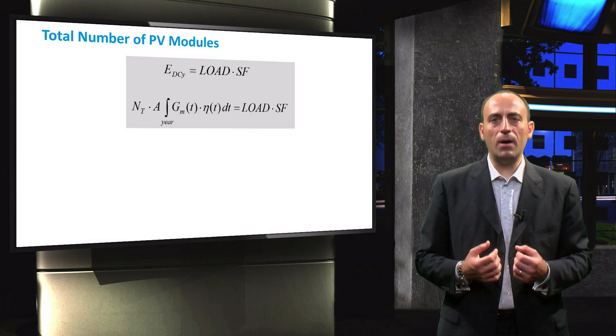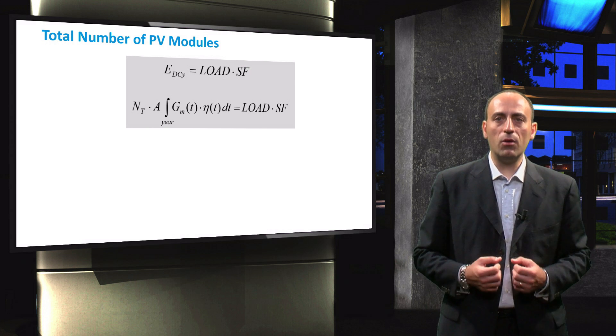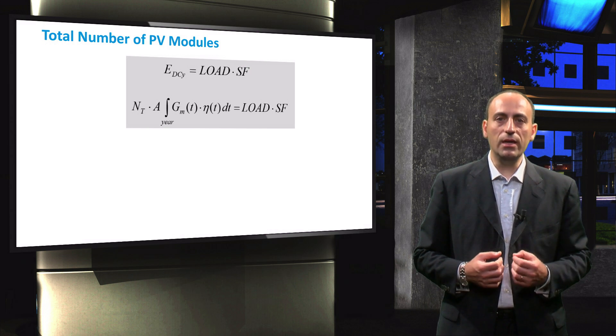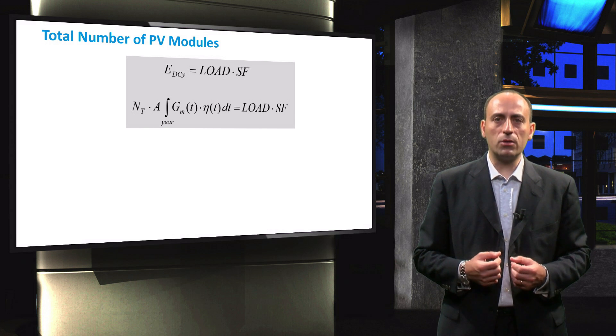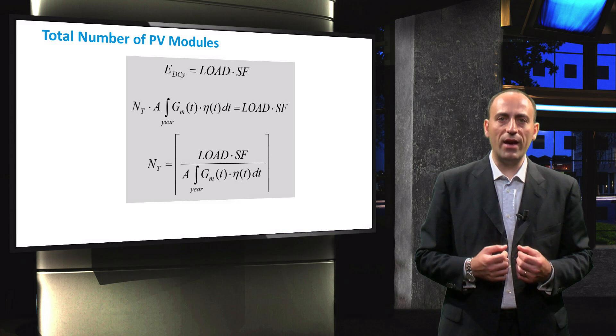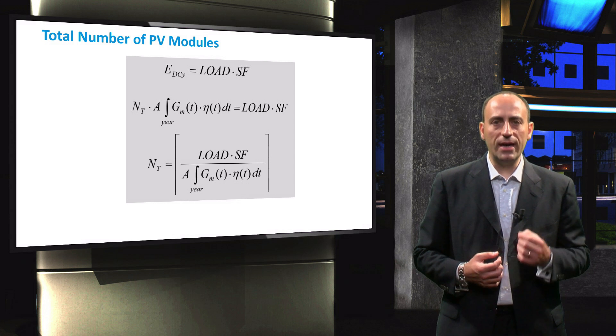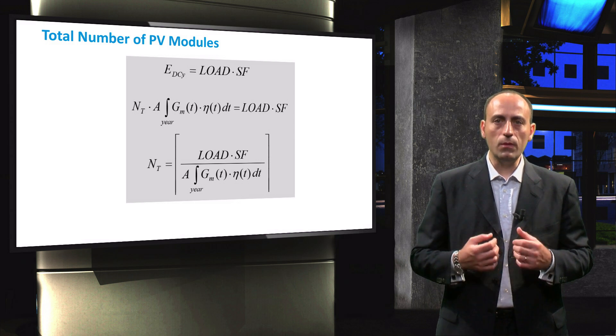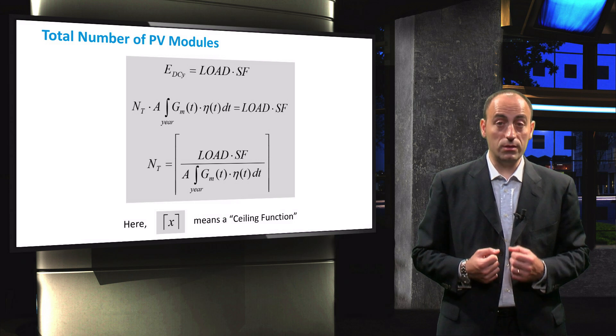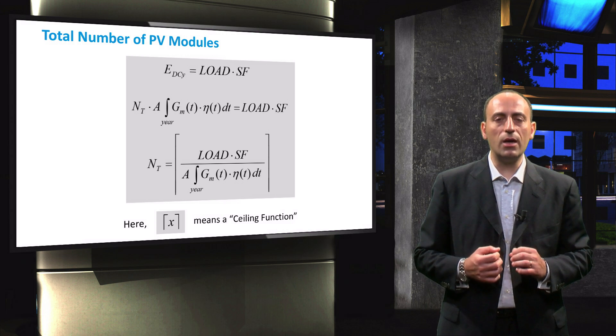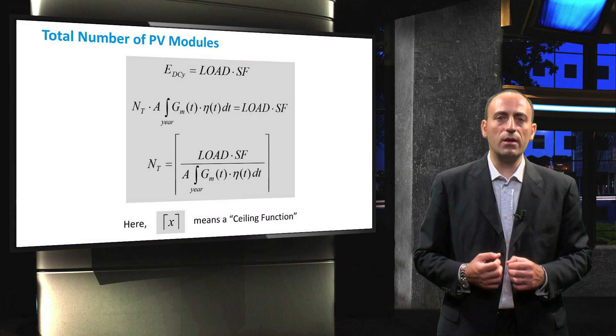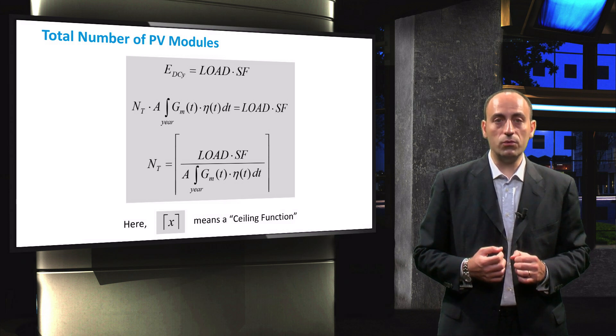With the energy balance in place, the total number of PV modules required, NT, can be calculated. This number is equal to the product of the load demand and the sizing factor divided by the energy generated by a single PV module. Note that the parentheses in this equation denote the required number of modules is rounded up to the nearest integer that is greater than or equal to the x.